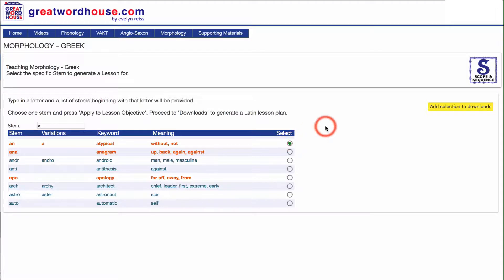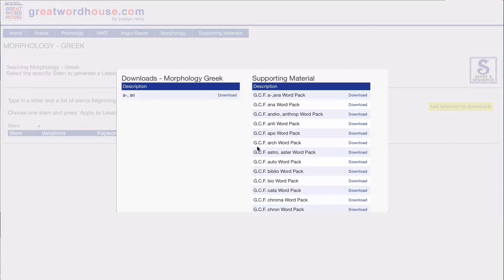Select a Greek combining form and click Add selection to downloads. On the right, you have supporting material word packs for each Greek combining form. Download the lesson plan.